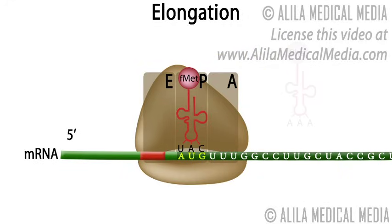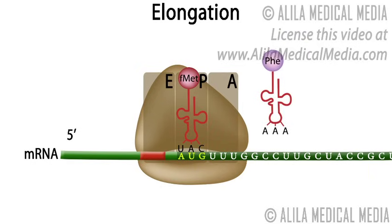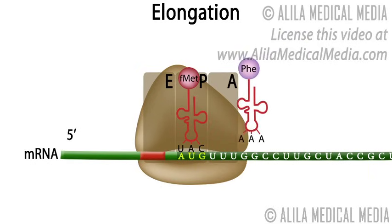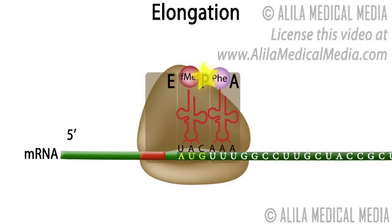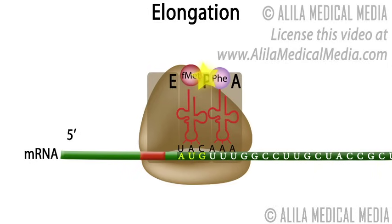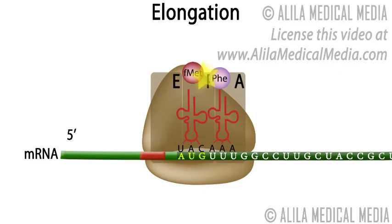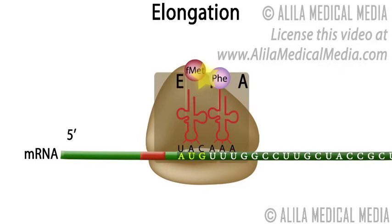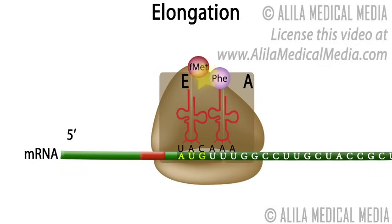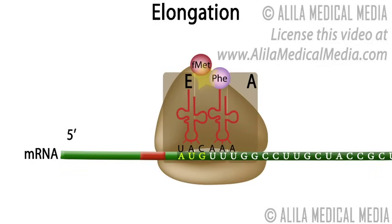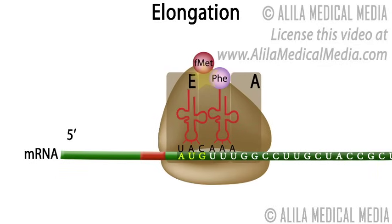When the right amino acid tRNA enters the A site, a peptide bond is made between the two now adjacent amino acids. As the peptide bond is formed, the tRNA in the P site releases the amino acids onto the tRNA in the A site and becomes empty. At the same time, the ribosome moves one triplet forward on the mRNA.